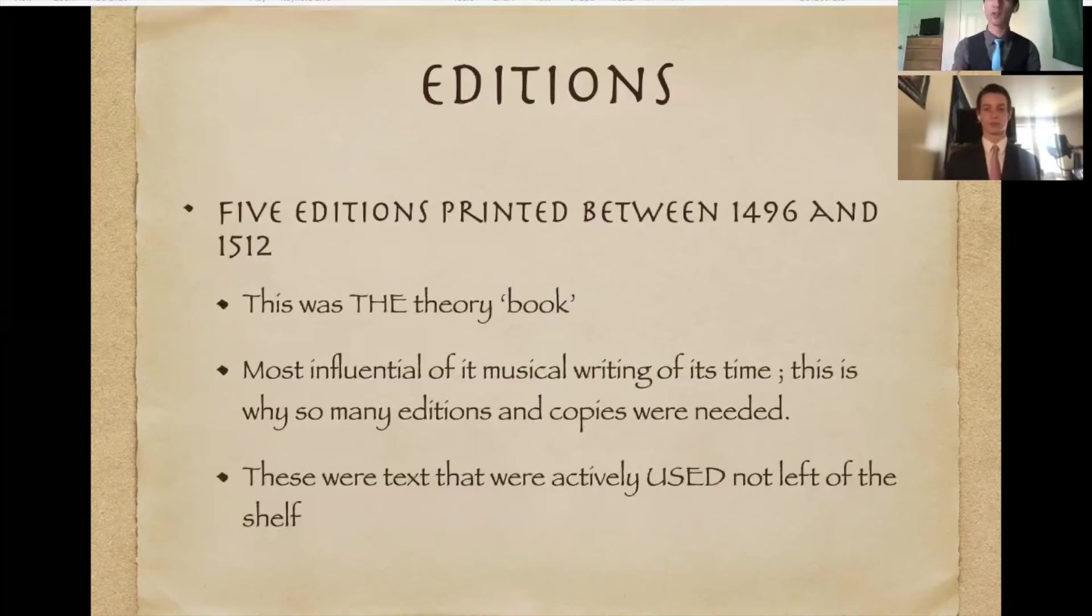So the editions, there were five editions that were printed between 1496 and 1512. So five in a 16 year period. That's a lot, right? It costs an incredible amount of money to print a book now. So imagine how much it probably would have cost to do it then. And you also kind of put into perspective that the people who printed the book and the book binders were not the same people. So this just shows that this was the theory textbook of its time, right? It was the most influential musical writing. This is why we had so many copies that were needed. And it also shows that these were not just thrown up on the shelf. We actively use this: teachers, composers and students read this text to gain something from it.